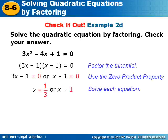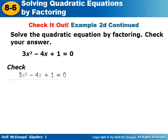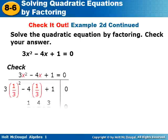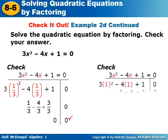We get x equals one third or x equals one, so the solutions are one third or one. Checking by plugging one third back into the equation gives zero equals zero, and plugging one back into the equation also gives zero equals zero.